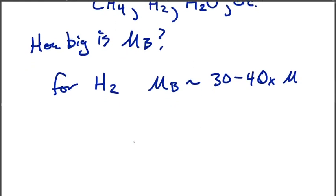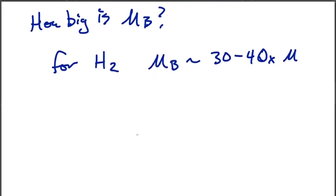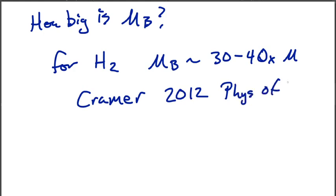And this should really concern those of us doing models of, for example, gas giant planetary atmospheres, which have diatomic molecular gases. In these systems, the bulk viscosity could actually play quite a role. One reference you can look at for some more information on this is Cramer 2012, Physics of Fluids. Cramer reviews many of these bulk viscosities for a variety of interesting diatomic ideal gases.